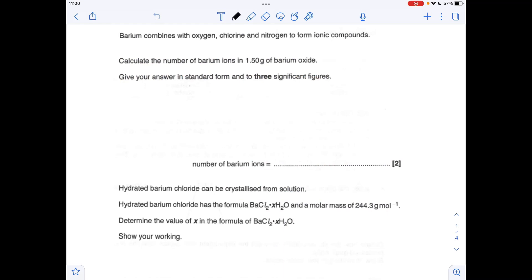The first thing obviously we need to know is the formula for barium oxide, so that's BaO, contains barium 2 plus ions and oxide ions, O2 minus. So if we've got 1.5 grams of barium oxide, we can work out how many moles that is. So just mass over MR, so 9.78 times 10 to the minus 3. Each mole of barium oxide contains a mole of barium 2 plus ions, so that means we've also got 9.78 times 10 to the minus 3 moles of barium 2 plus ions.